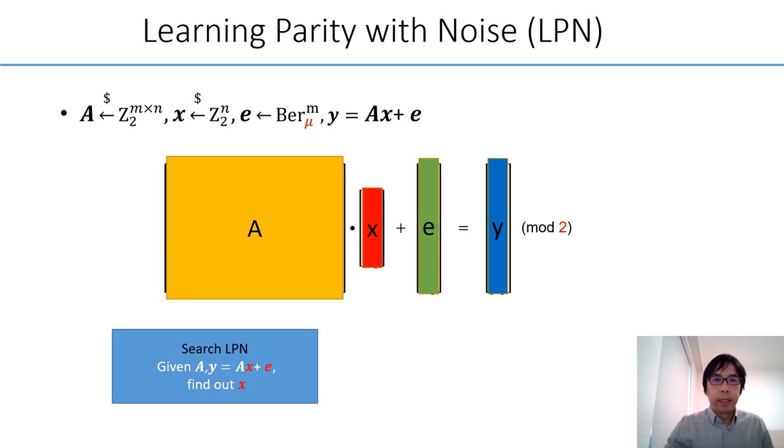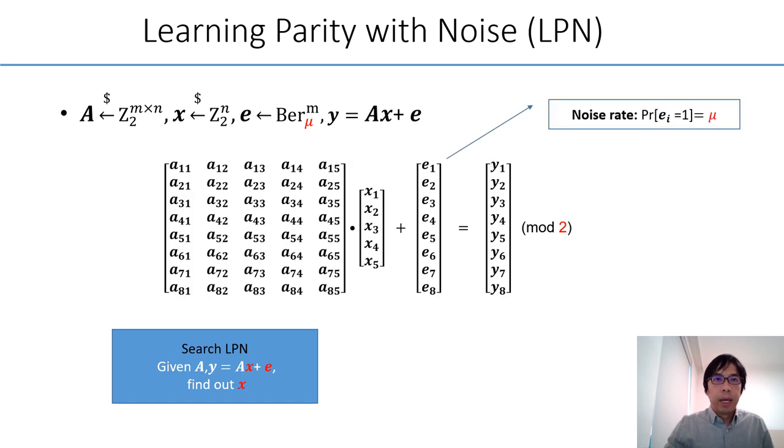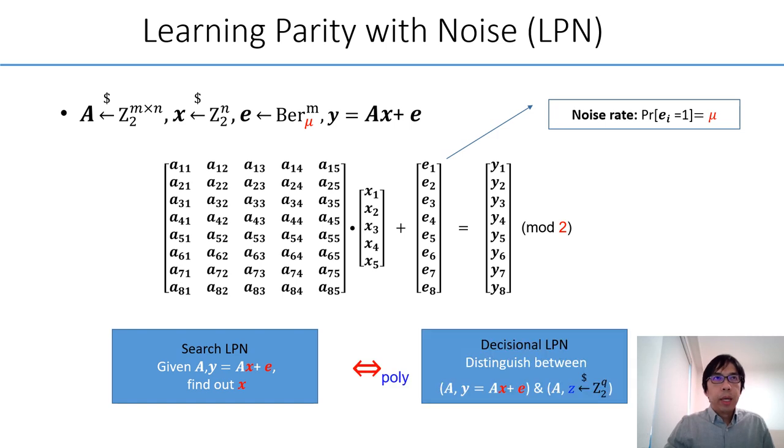Where x and A are uniformly random and A is public, and the noise e follows the coordinate-wise independent Bernoulli distribution where mu is the noise rate. In cryptography, it is more convenient to use the so-called decisional LPN to facilitate security proofs, and both variants are polynomially equivalent. Therefore, for security analysis we can only consider the search version.